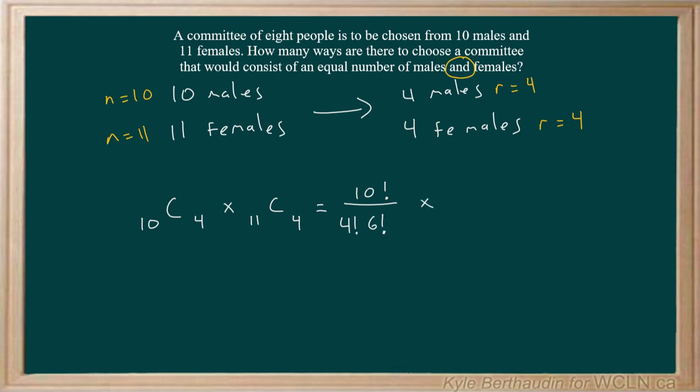And that gets multiplied by 11 factorial divided by 4 factorial multiplied by 11 minus 4, which is 7 factorial.